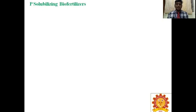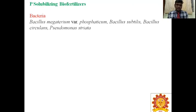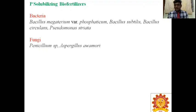Next is phosphate-solubilizing biofertilizers. Both bacteria and fungi can solubilize phosphorus. Solubilizing means the conversion of unavailable form of phosphorus to available form of phosphorus. Bacteria involved include Bacillus megatherium var. phosphaticum, Bacillus subtilis, Bacillus circulans, and Pseudomonas striata. Fungi that solubilize phosphate include Penicillium species and Aspergillus awamori. Indian soil is rich in phosphorus but it is in unavailable form; these microorganisms make it available to plants.